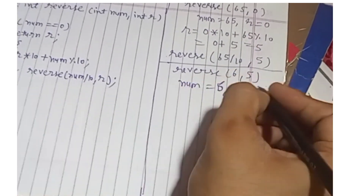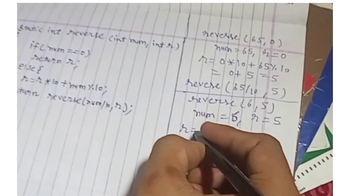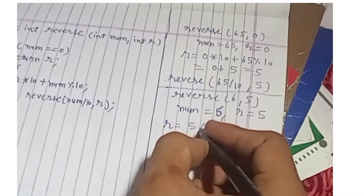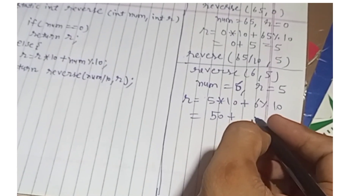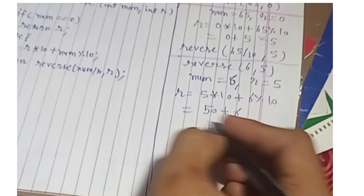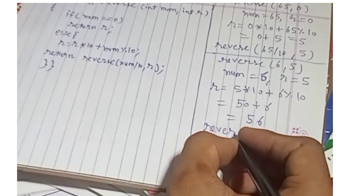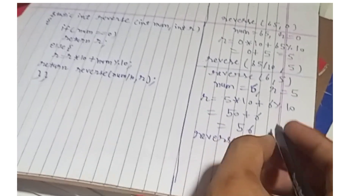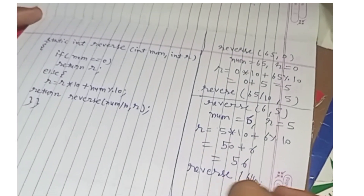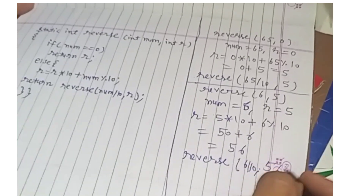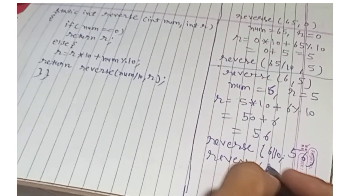6 is not equal to 0, so it goes to the else block again. R is recalculated: R = 5 * 10 + (6 % 10) = 50 + 6 = 56. Since 6 is less than 10, 6 % 10 returns 6. The new value of R is 56. The method is called again recursively — num is 6 divided by 10, which gives 0 in integer division, and R is 56. So reverse(0, 56) is called.